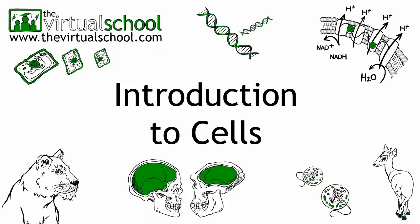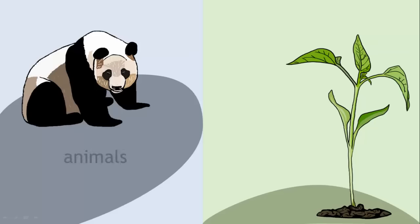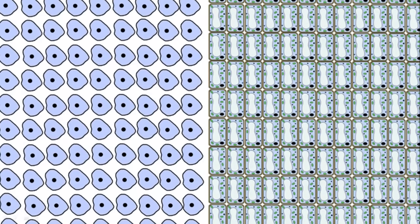The cell is the basic unit of life. Some living organisms, such as animals and plants, are made of hundreds of trillions of these basic units of life, called cells.